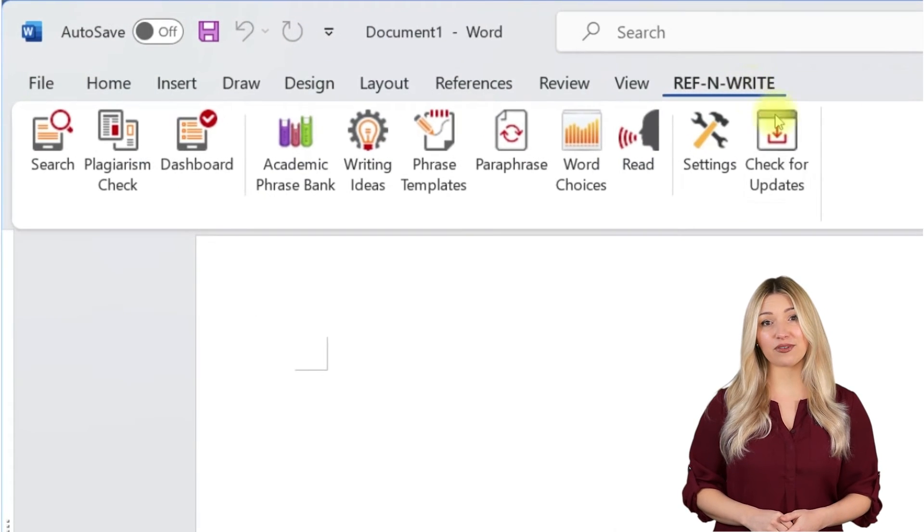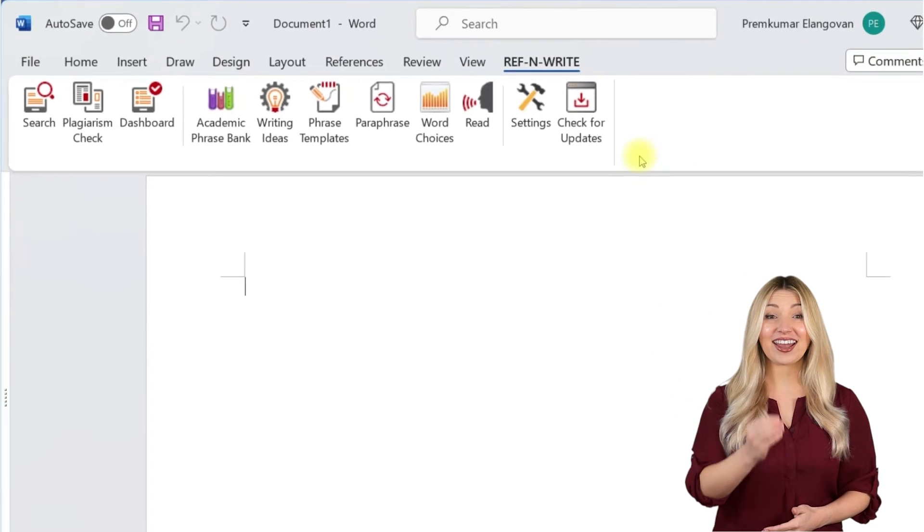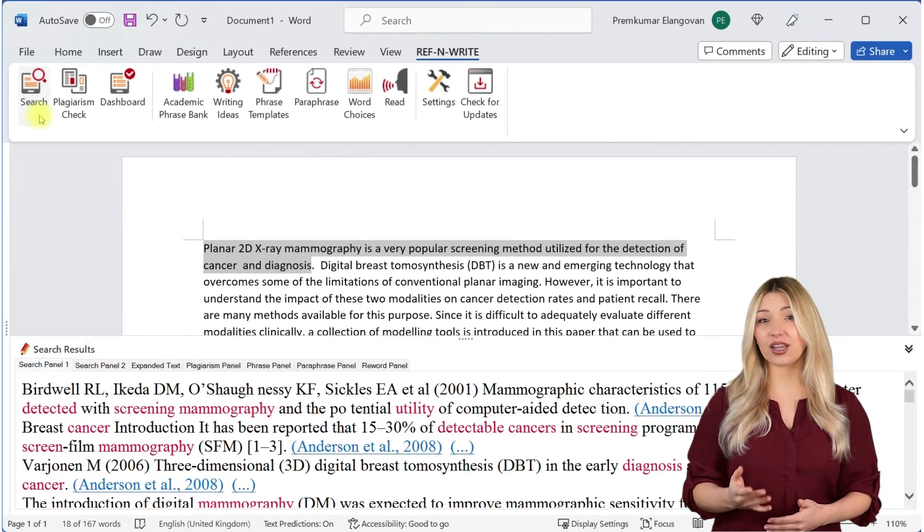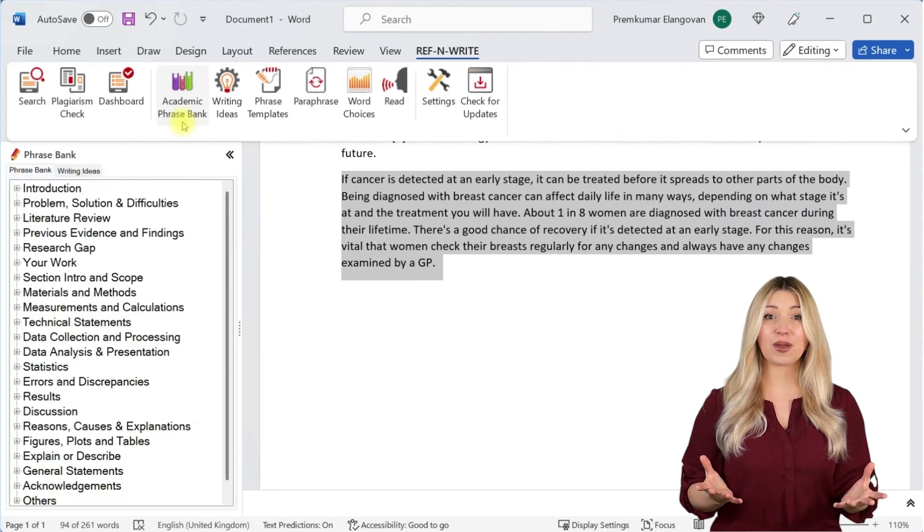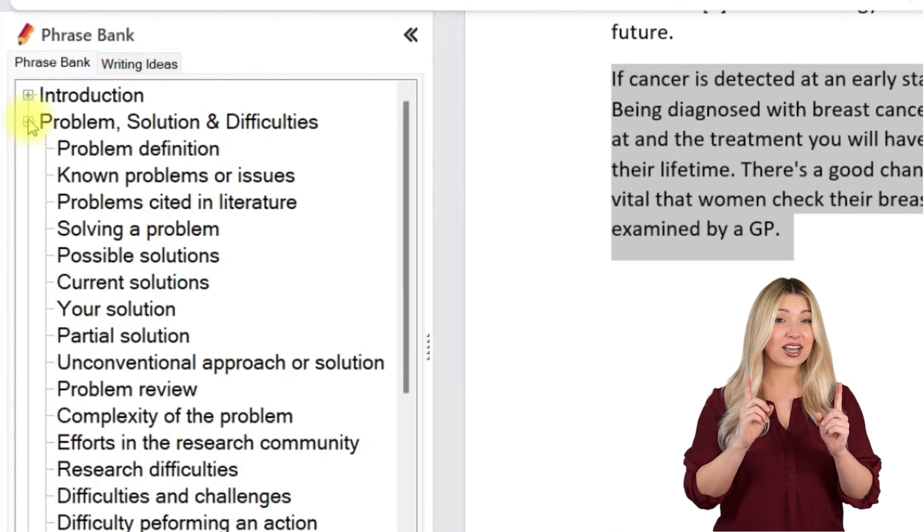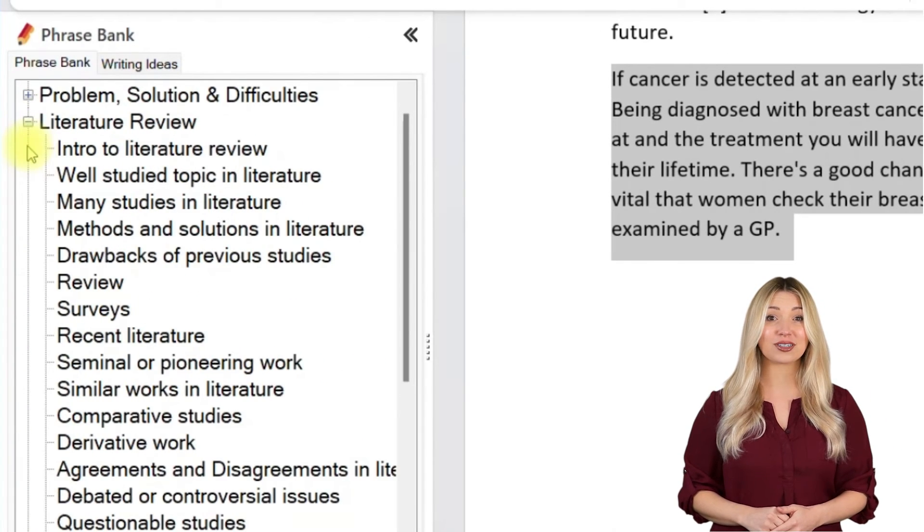If you still haven't installed RefnWrite software, please do it. It comes with referencing tools, plagiarism checkers, proofreading tools, paraphrasing tools, an academic phrase bank, and many other useful features to help you write your research papers and thesis.